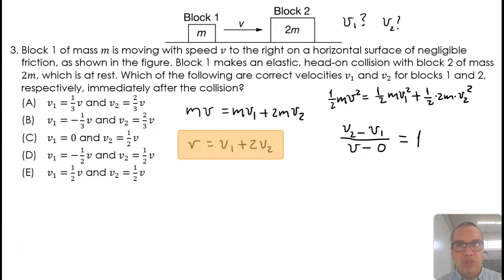In this case, our second equation will be v is equal to v2 minus v1. If we combine this equation with the equation from momentum, we can cancel v1 and we are left with 2v is equal to 3v2, or v2 is equal to 2/3 v. Simple substitution will tell us that v1 is equal to 2/3 v minus v, or negative 1/3 v.